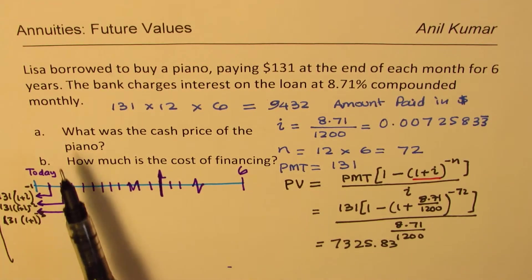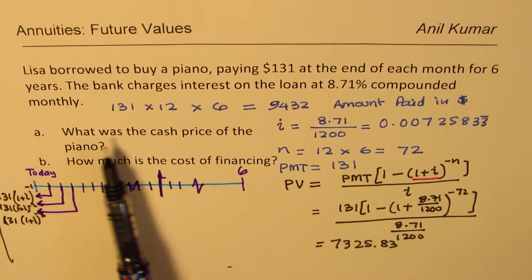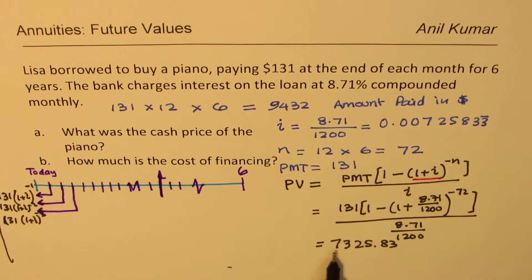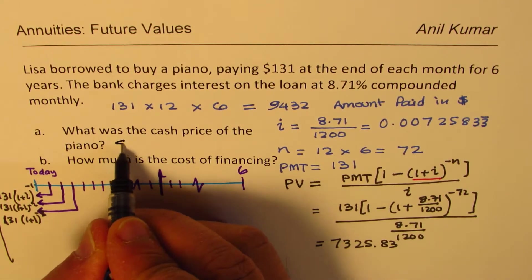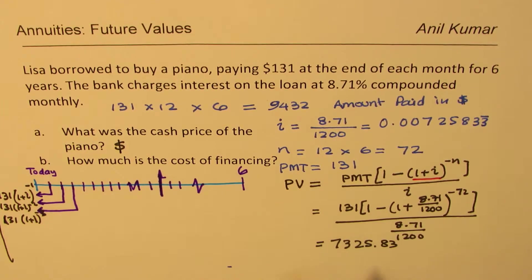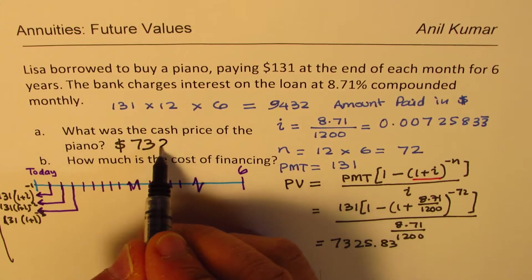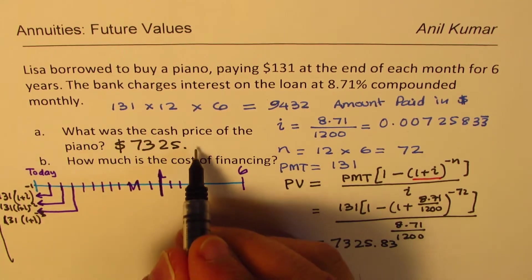So now we can answer all our questions. It means, what was the cash price of the piano? So the present value is the cash price of the piano. So we can write down the cash price of the piano was $7,325.83, right?